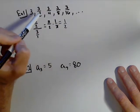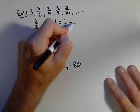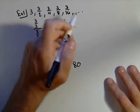And we can keep going. We have a common ratio of one half, so that's our r.